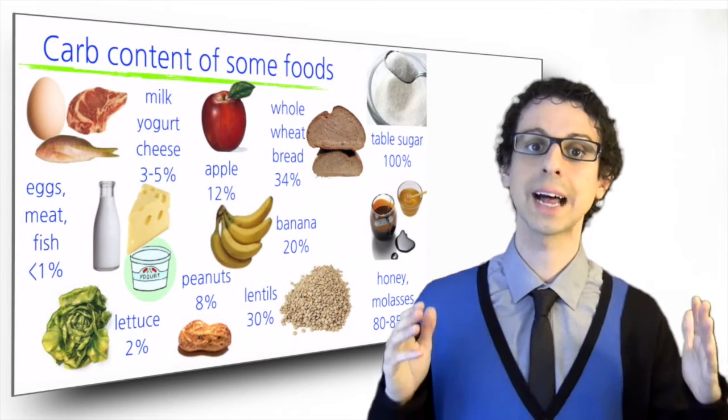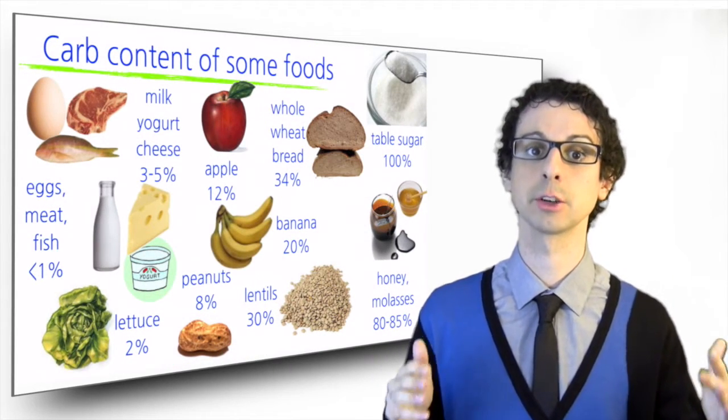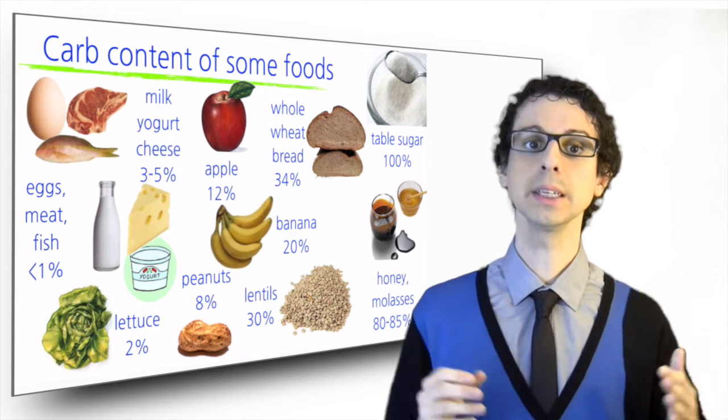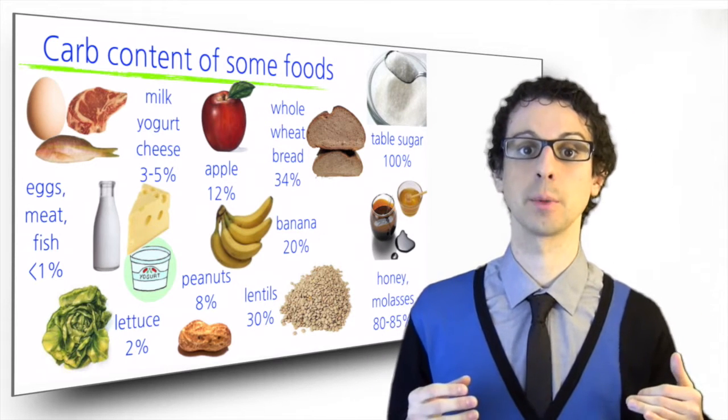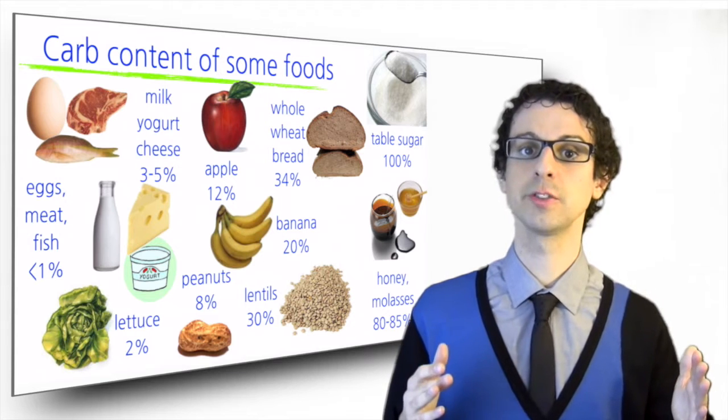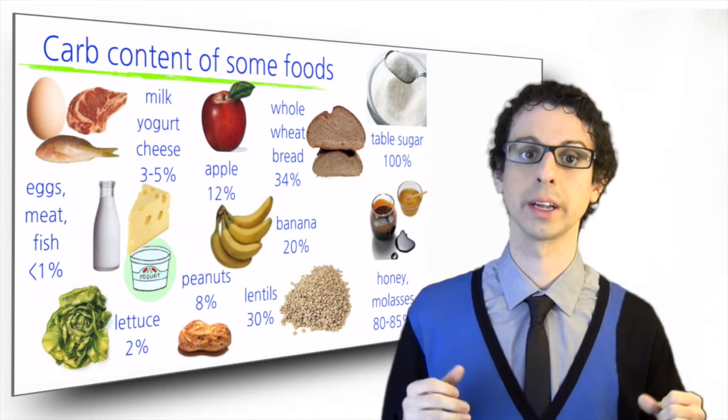This slide shows the naturally occurring carbohydrate content of some foods. Eggs, meat, and fish do not provide significant amount of carbohydrates. Non-starchy vegetables are generally very low in carb.